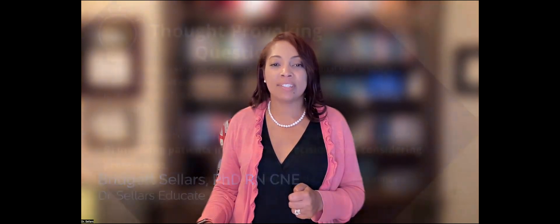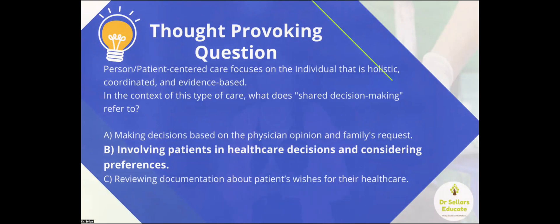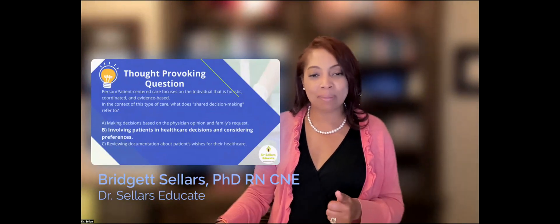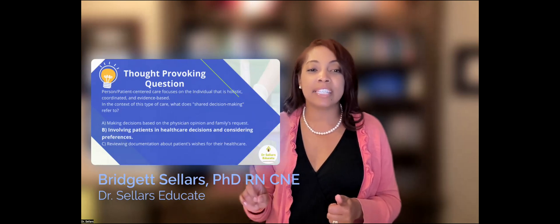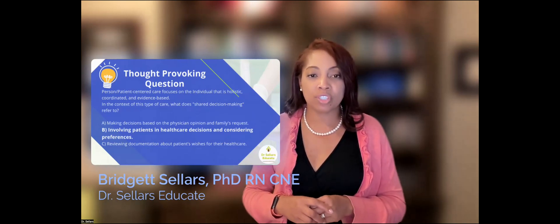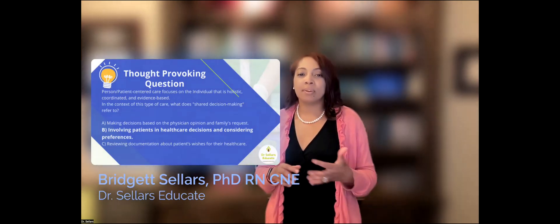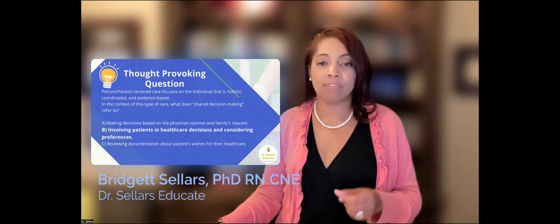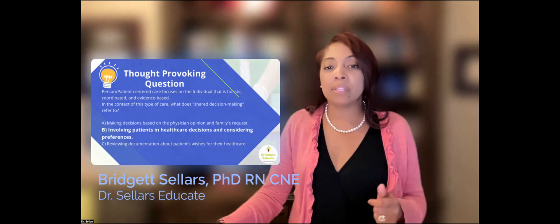We can engage in learning circles within the classroom setting so that students are really able to ask questions and clarify concepts related to person-centered care, so that indeed they can meet these essentials and QSEN competencies and standards described in our snapshot today. Now let's go back and take a look at how you did with our thought-provoking question. If you chose answer B, you are correct. B — involving patients in healthcare decisions and considering preferences — is the correct answer. Option A leaves the patient out; don't be tricked by the fact it highlights physician opinion and family's request, but forgets about the patient. Option C — reviewing documentation about patients' wishes — may be important, but there's no information indicating the patient is unable to make an informed decision for themselves. That is why B is the best option.